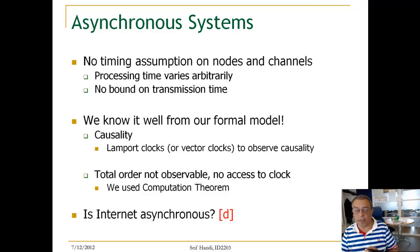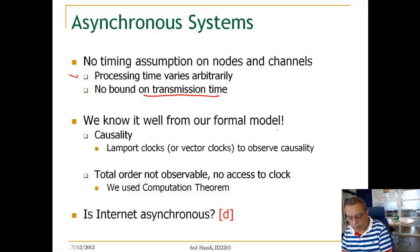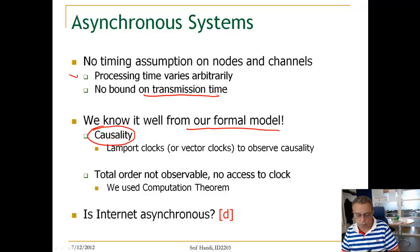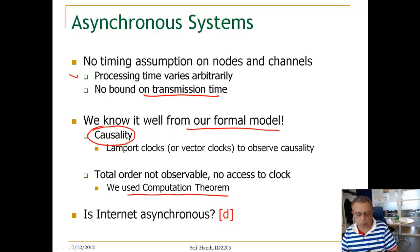In asynchronous systems, the processing time of every node varies arbitrarily — the node could be overloaded, for example — and there is no bound on transmission time. We handle this using another notion of logical time, which we build based on causality. We also know that total order is not observable if there is no access to a global clock, and we use the impossibility theorem to show that total ordering of events is not observable.